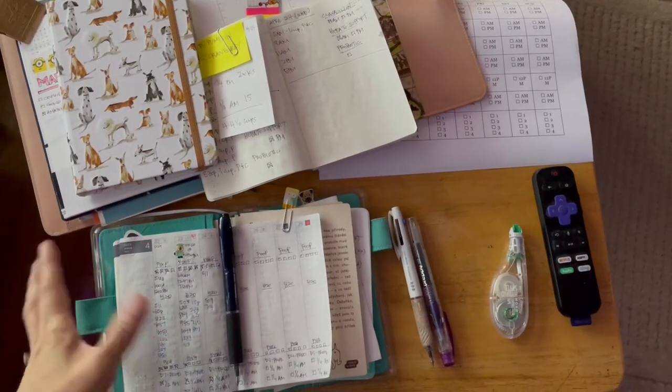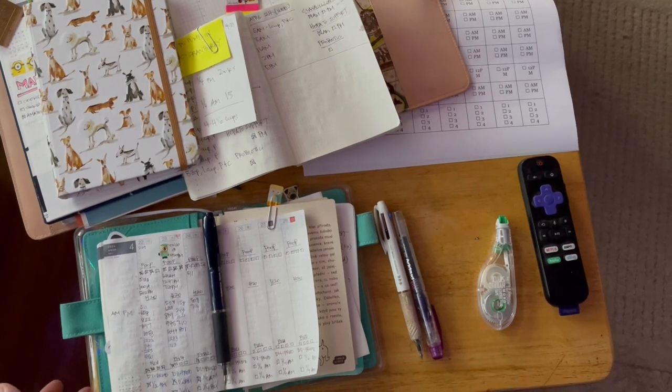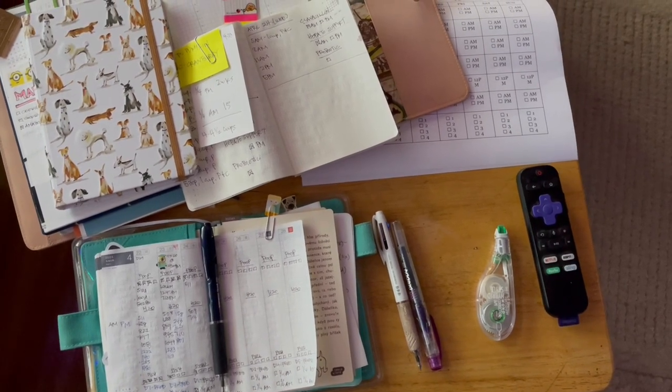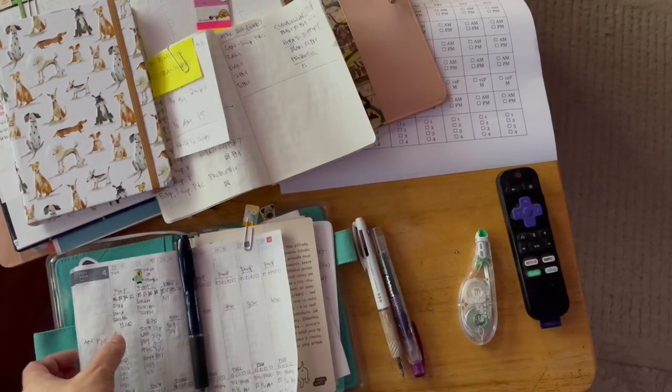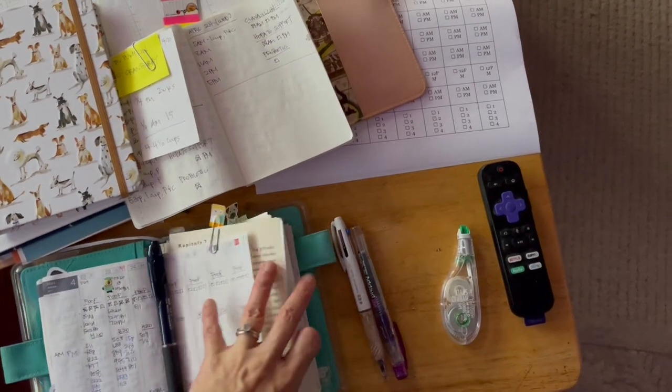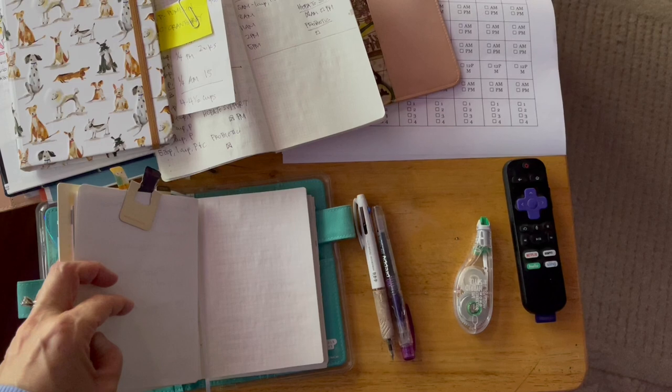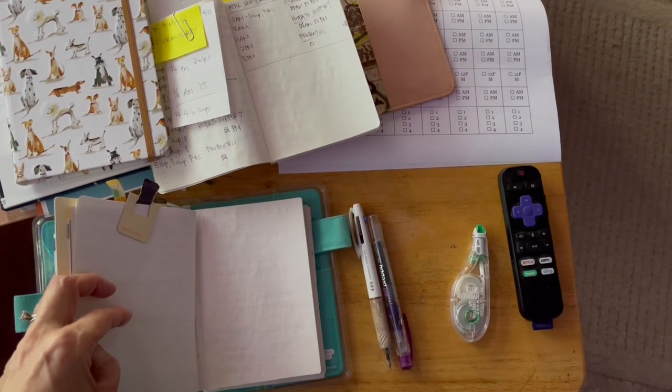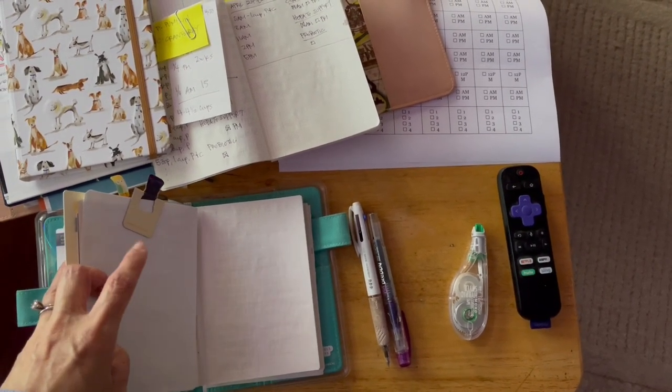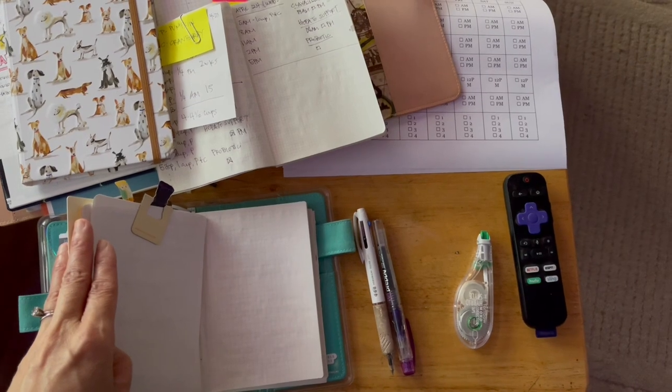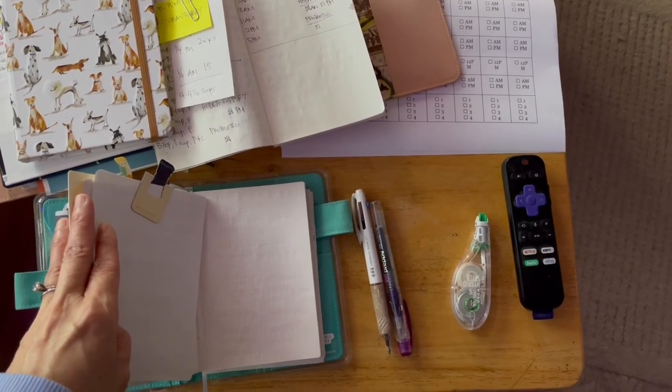This is generally my setup every morning. I use a TV tray because the couch is behind me and Bruce is behind me. This is the A6 weekly supplement. Back here I have the blank A6 Hobonichi notebook. This is his health diary since we first adopted him back in October of 2018.